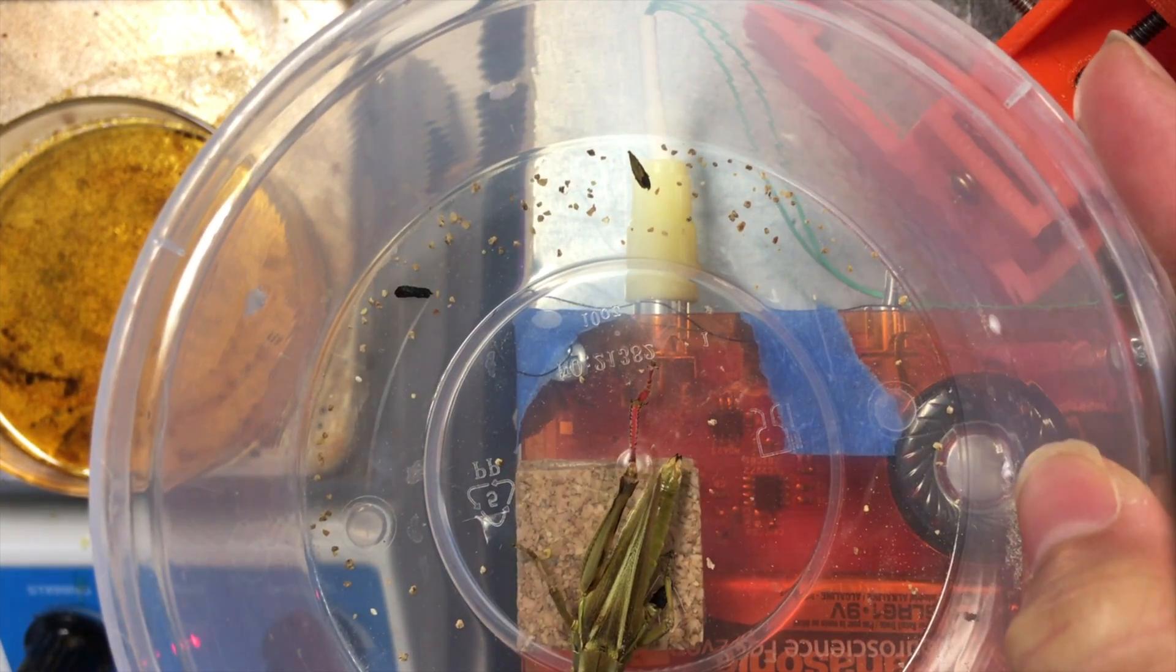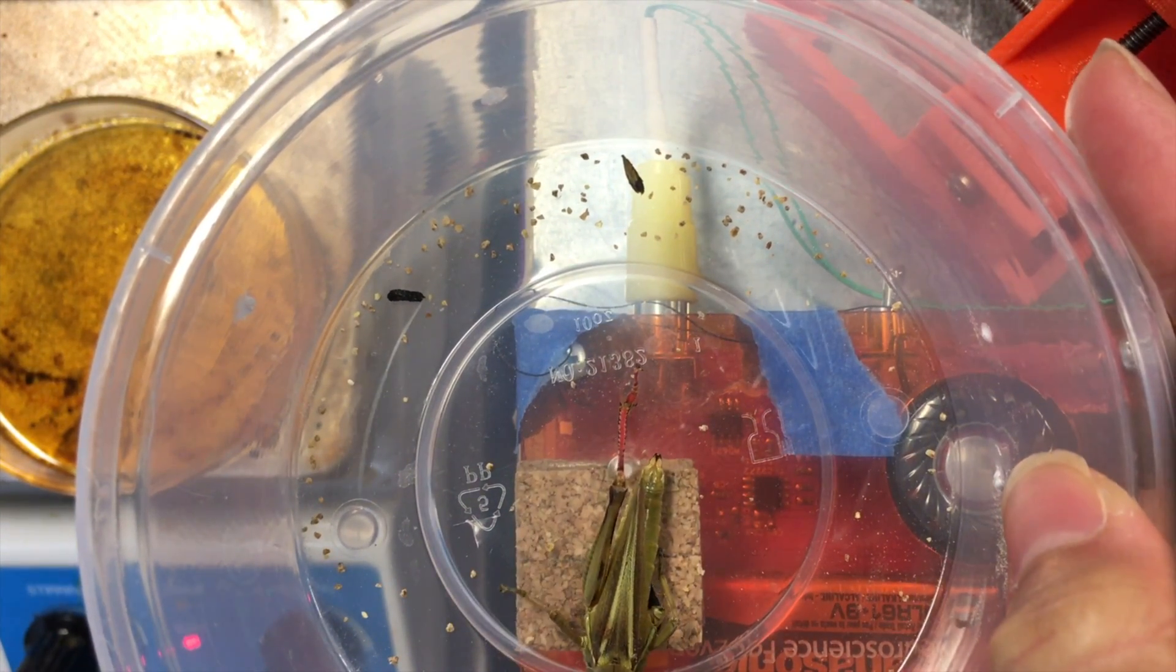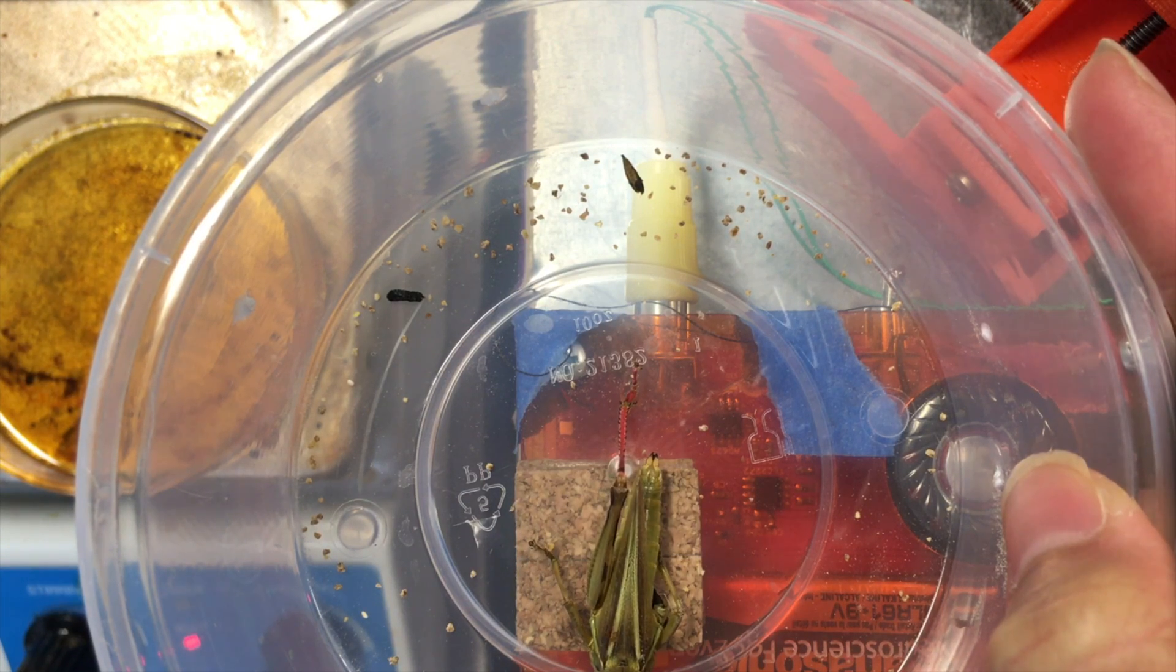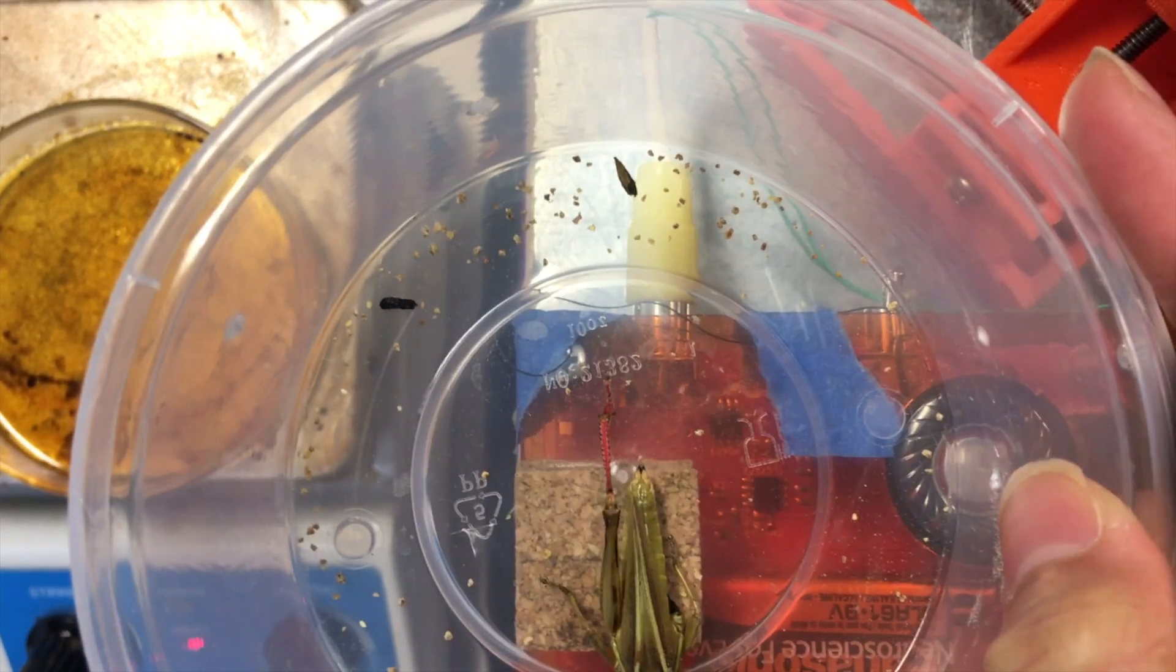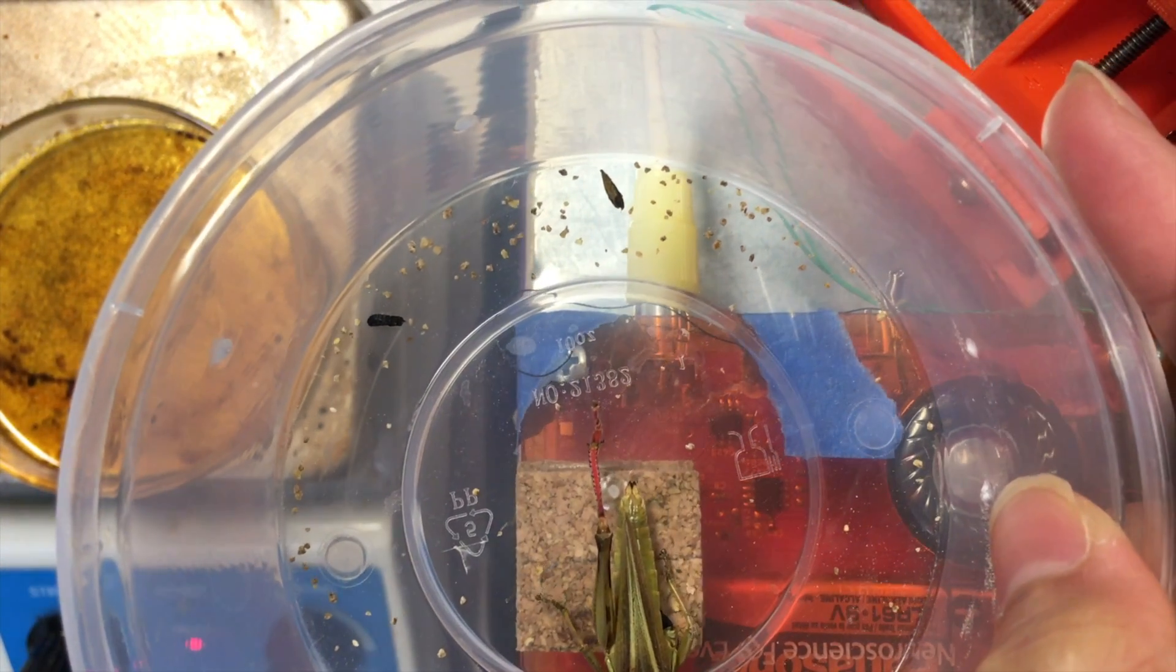This neuron receives visual information from the eyes and then sends the information to the motor neurons and activates the leg muscles, so that the grasshopper can see an approaching object and jump away to avoid colliding with it.